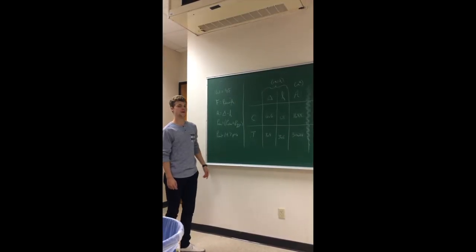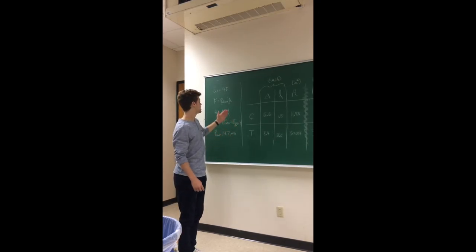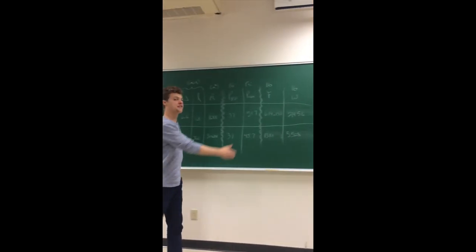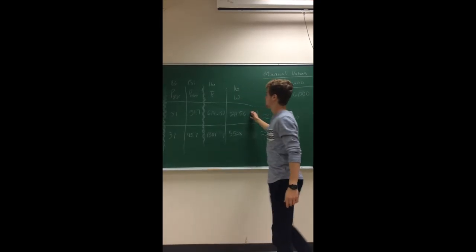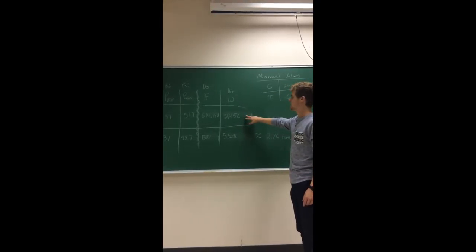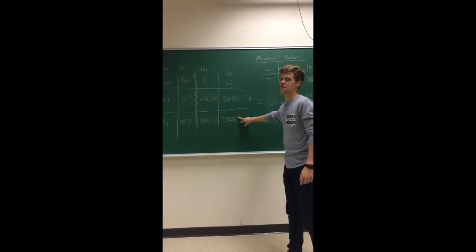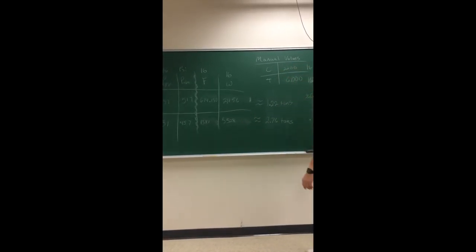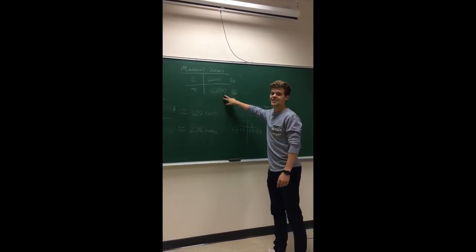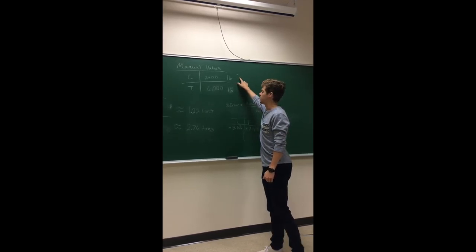To conclude our experiment, we wrote our given equations and we created a chart. Basically, with the chart, you plug and chug in the equations and you find your final weight. For the weight of the car, we found 2,456 pounds. For the weight of the truck, we found 5,528 pounds. We then went and checked the manuals of our vehicles. The truck weighed 6,000 pounds and the car was 2,600 pounds.